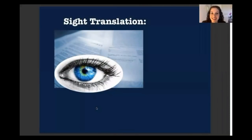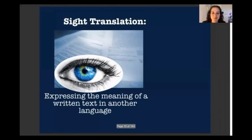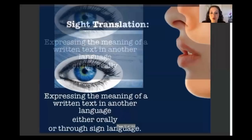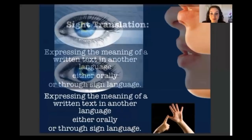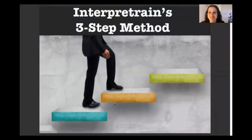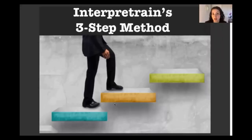Sight translation means expressing the meaning of a written text in another language, either orally through spoken words or through sign language. This mode of interpretation is often the most neglected one. Many people tend to focus more on consecutive and simultaneous, and then when they get to the test they feel lost in the sight translation portion.